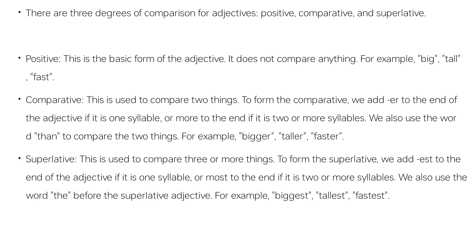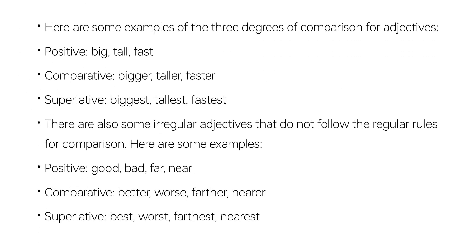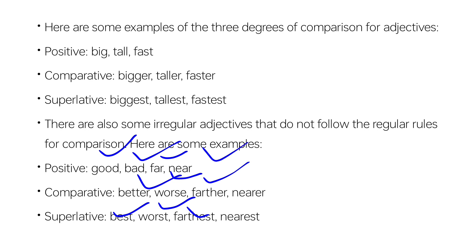Some adjectives have irregular comparisons. For example: good, better, best; bad, worse, worst; far, farther, farthest; near, nearer, nearest; little, less, least; much, more, most; many, more, most; late, later, latest; old, older, oldest.